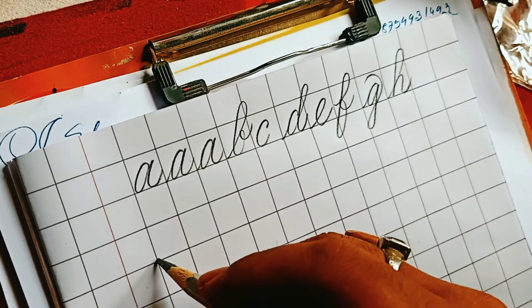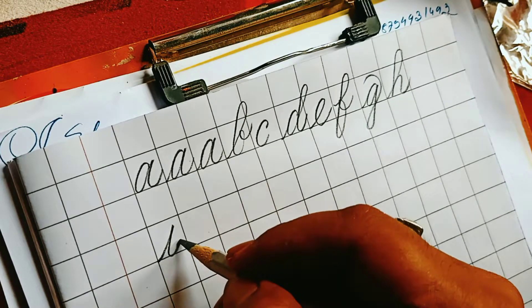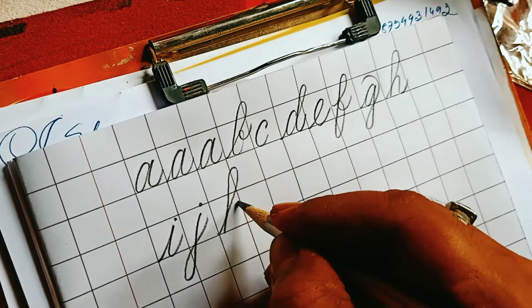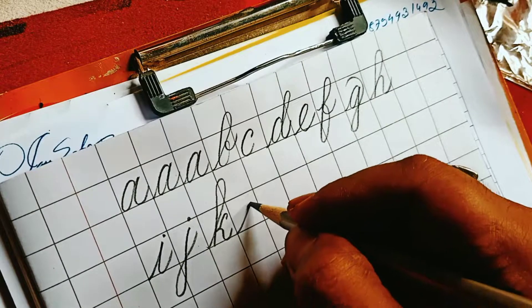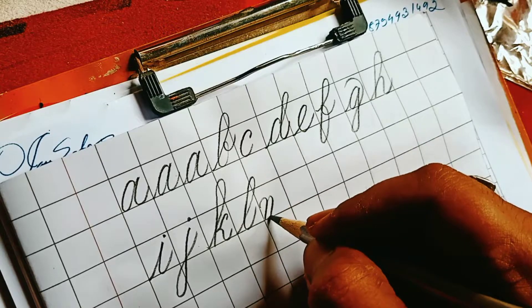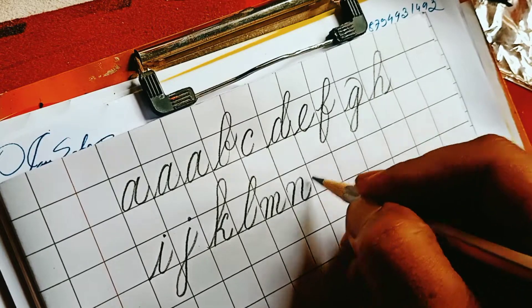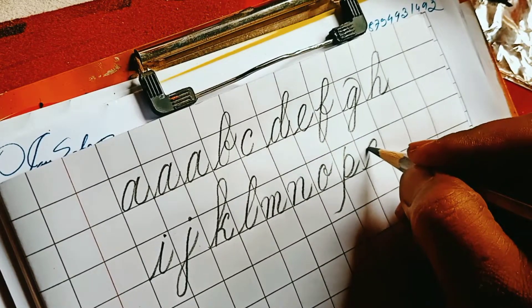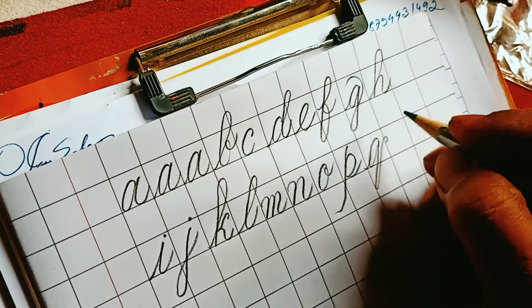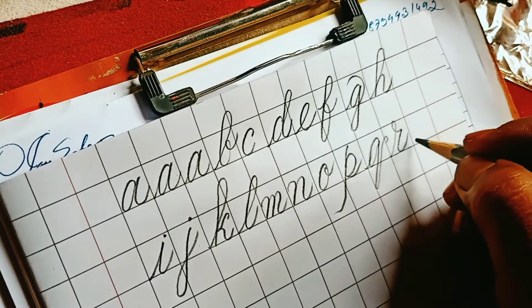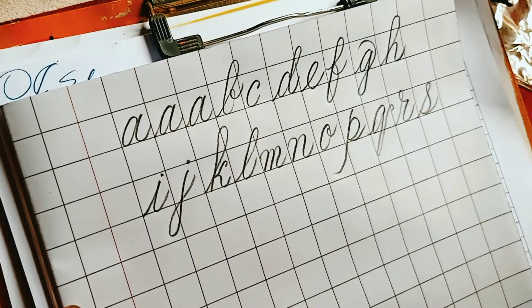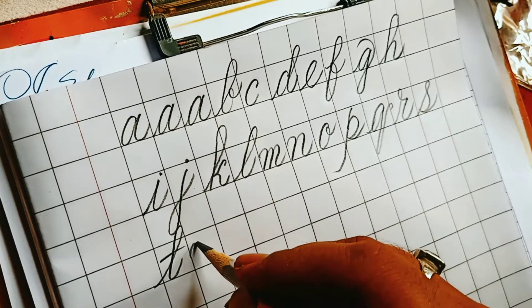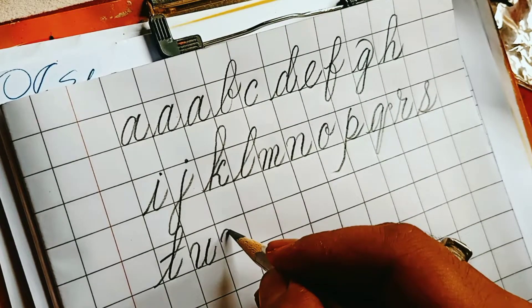Okay, the I. Leave a space, bigger gap. J, T, L, M, N, O, V, U, R.